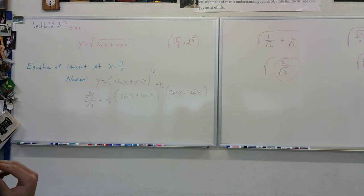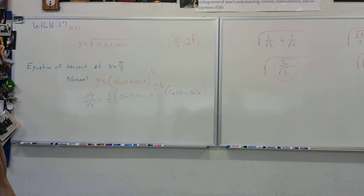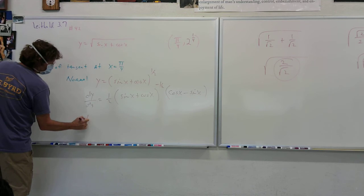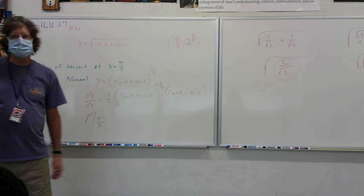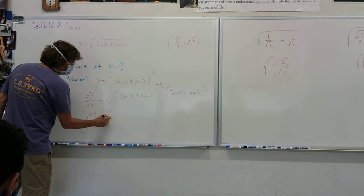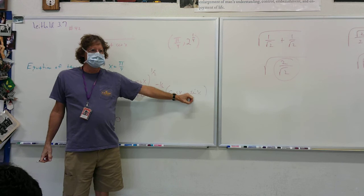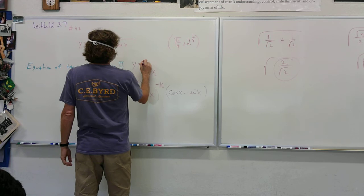What is the slope at pi over 4? Put pi over 4 in there and find out what the slope equals. I want someone who always frowns at me — they have it in their eyes: 'Mr. Evans, we already know this, this is too easy.' I want one of those folks to tell me what is the slope at pi over 4. Zero. Yeah, the slope is zero. Cosine of pi over 4 minus sine of pi over 4 is going to be zero. Zero times all that is going to be zero. So when you write the equation, it's a horizontal line. The tangent is y equals 2 to the 1/4.